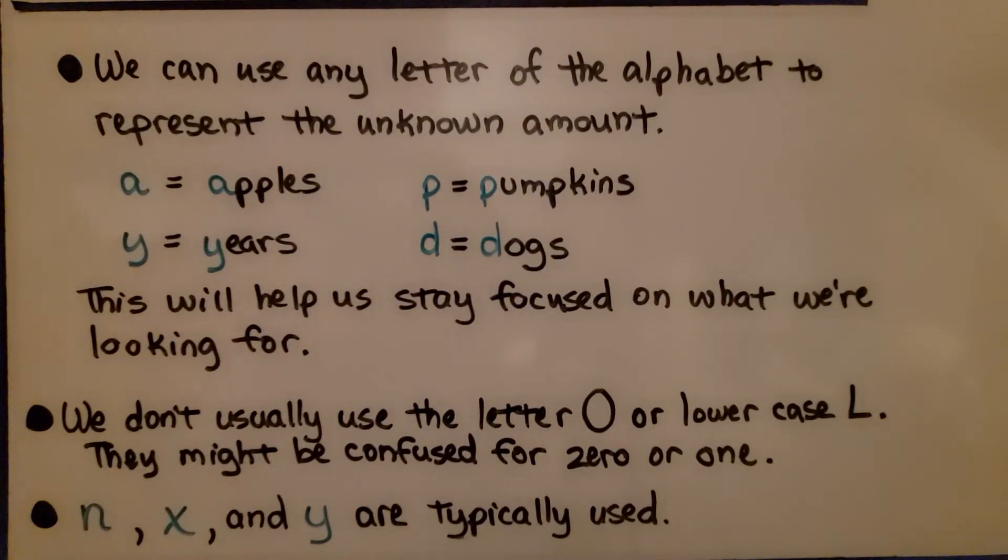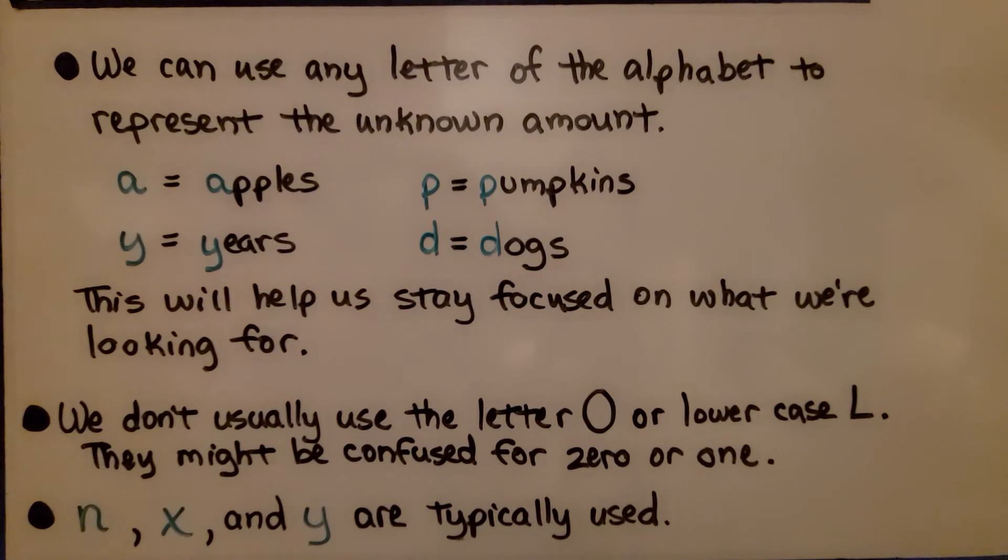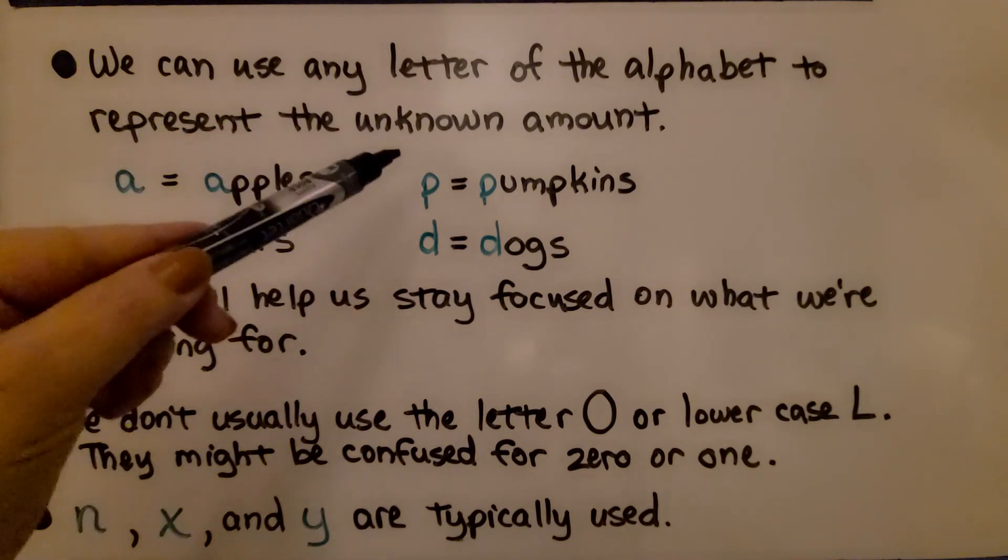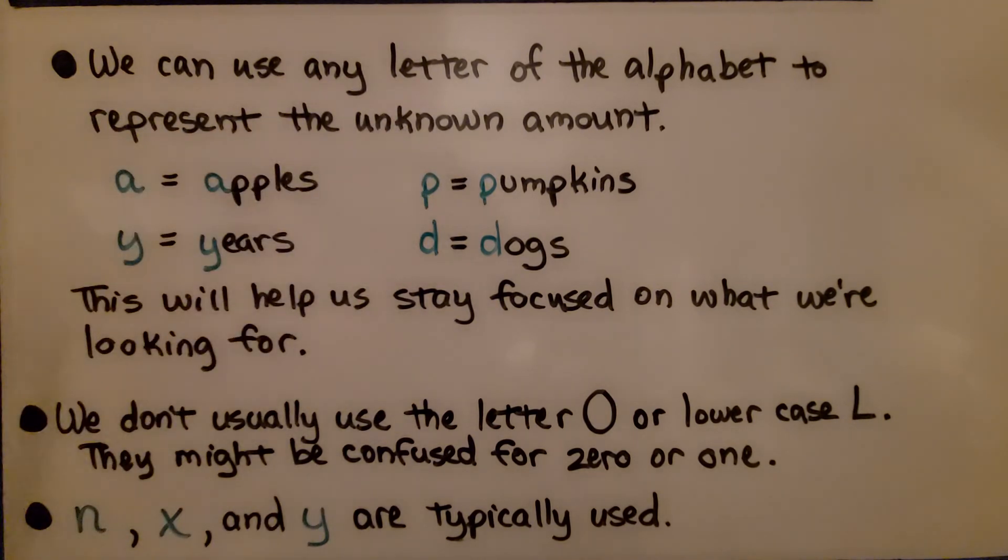We can use any letter of the alphabet to represent the unknown amount. Using any letter as our variable, if we are finding apples, we can use A for apples. If it's pumpkins, we can use P for pumpkins or Y for years or D for dogs.